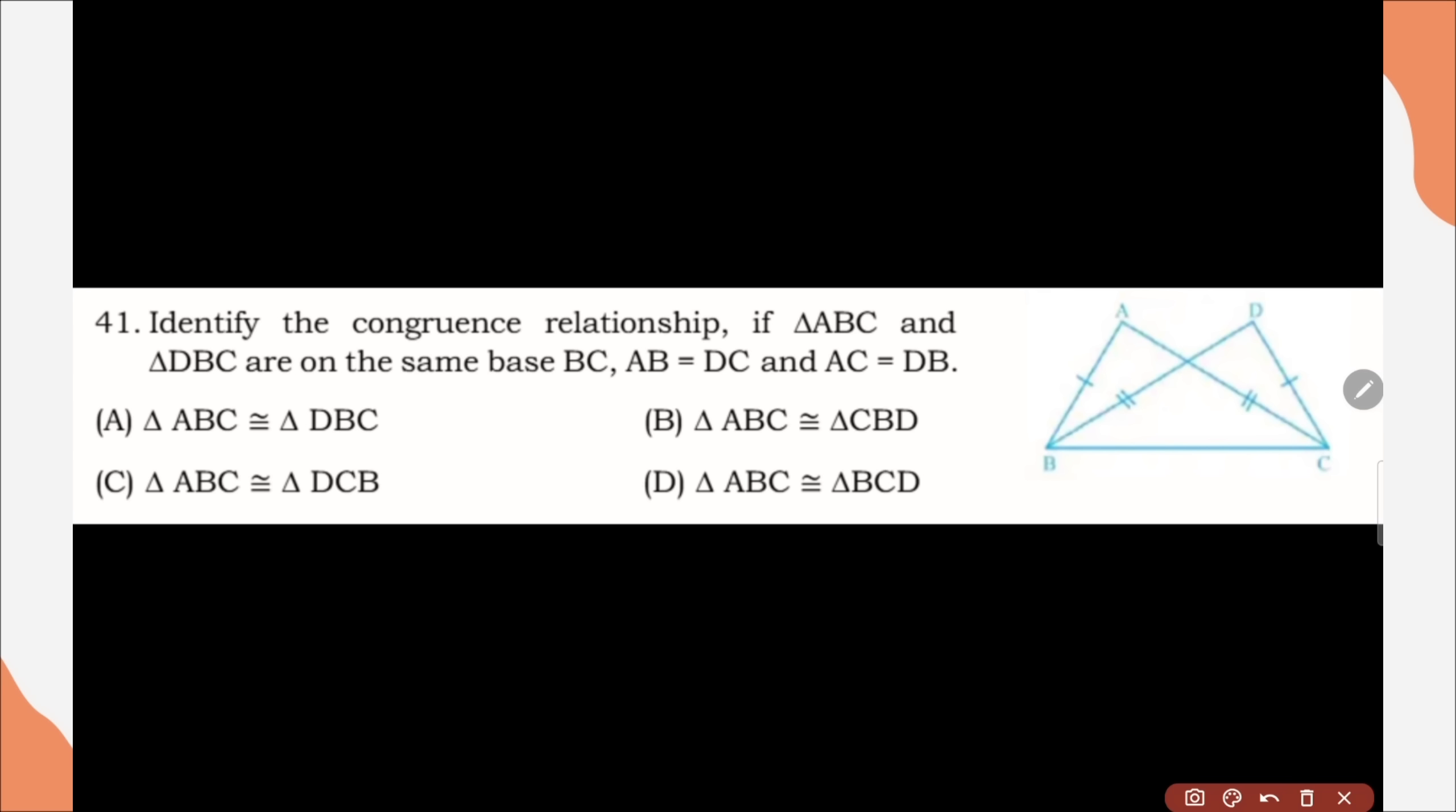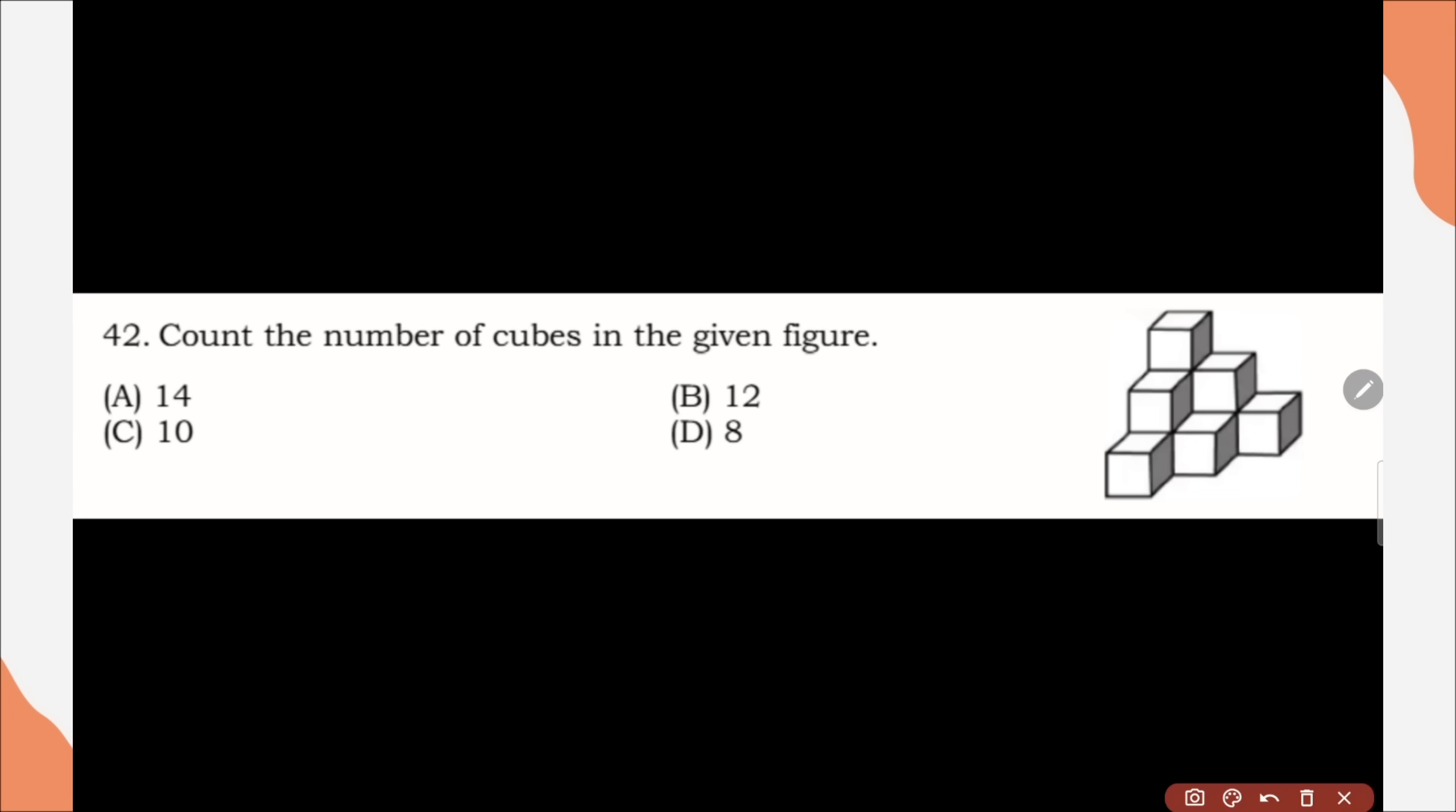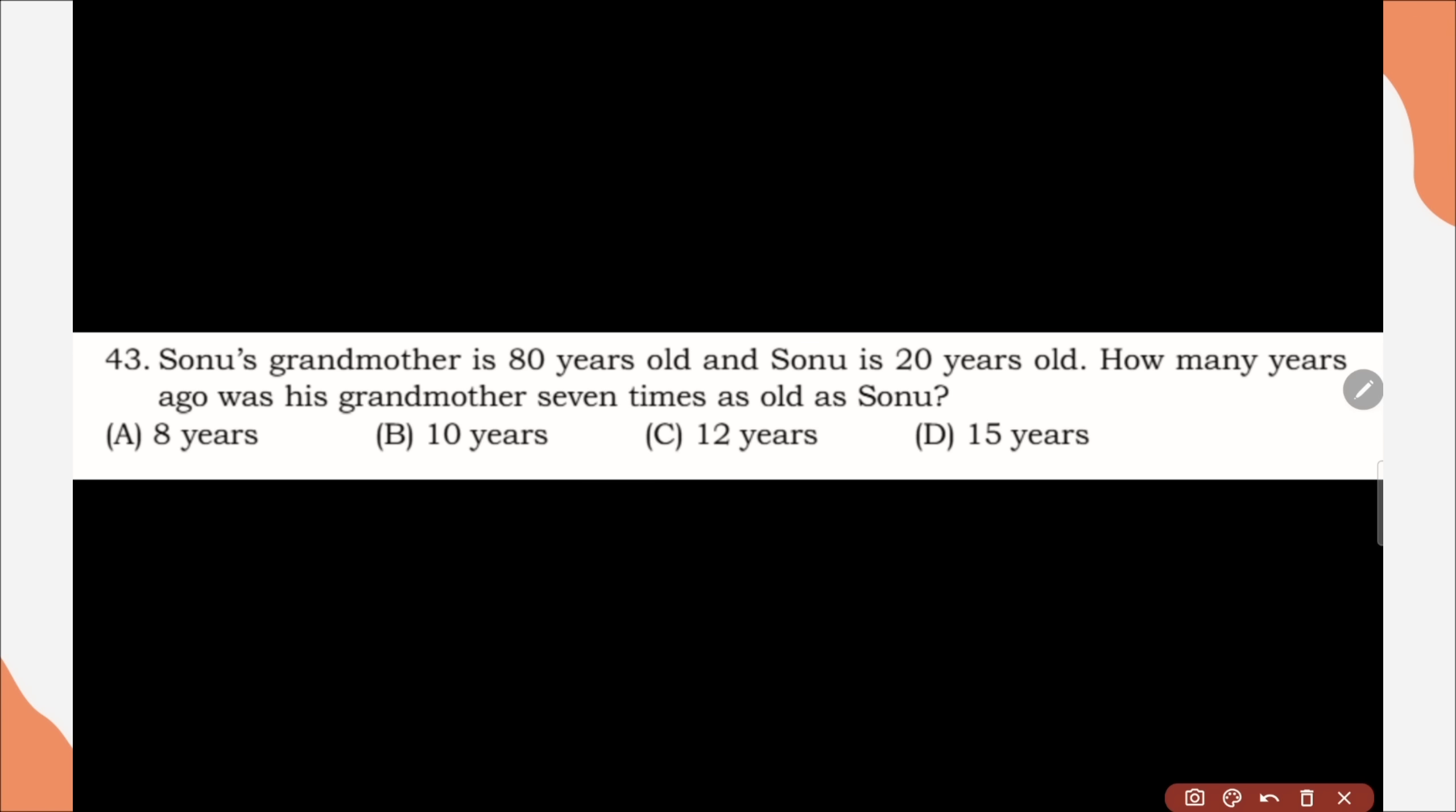Question number 41, identify the congruency relationship. If triangle ABC and triangle DBC are on the same base BC, AB is equal to DC and AC is equal to DB. Here, correct option is option C, triangle ABC is congruent to triangle DCB. Question number 42, count the number of cube in given figure. Correct option is option D, 8. Question number 43, Sonu's grandmother is 80 year old and Sonu is 20 year old. How many year ago was his grandmother 7 times as old as Sonu? Correct option is option B, 10 years.